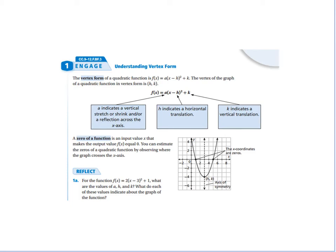In this video, we're going to look at understanding the vertex form. So as you can see here, the vertex form is f of x equals a times the quantity x minus h squared plus k.